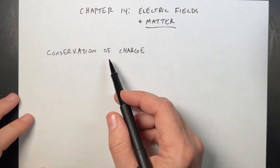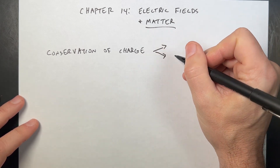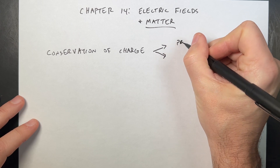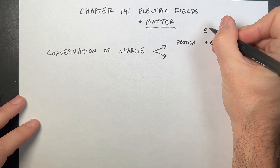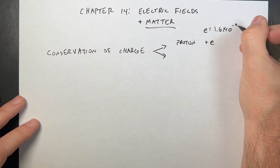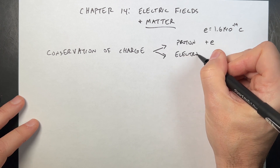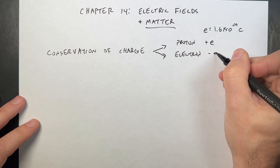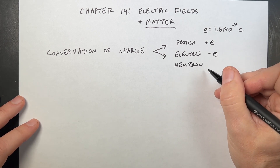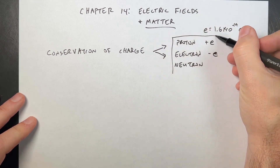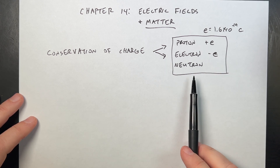At the fundamental level, we can't just create charge. There are three really common objects we're going to see: the proton, which has a charge of plus e, where e is 1.6 times 10 to the negative 19 coulombs; the electron, which has charge minus e; and the neutron, which has a net charge of zero. Pretty much everything around you is made up of these three things, and that's kind of crazy.